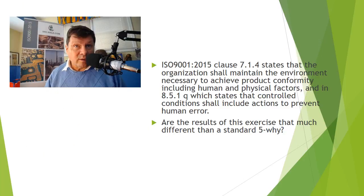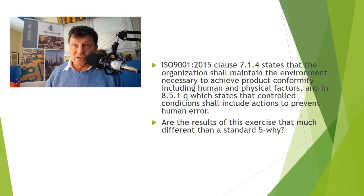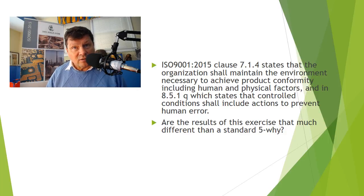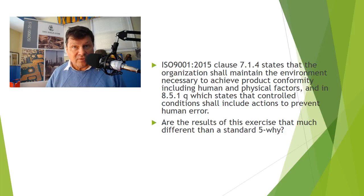So what do we make of all this? Now that we have a system to understand some of the human factors, we have a way to do what the 2015 standard says — which is in 7.1.4, that the organization shall maintain the environment necessary to achieve product conformity, including human and physical factors, and in 8.5.1, which states that controlled conditions shall include actions to prevent human error.